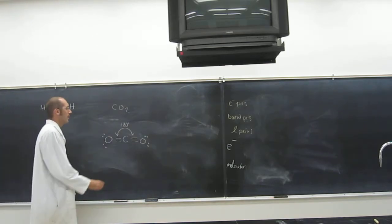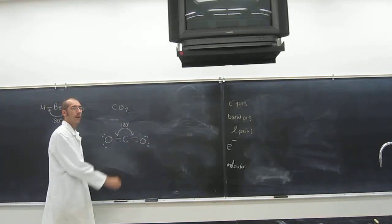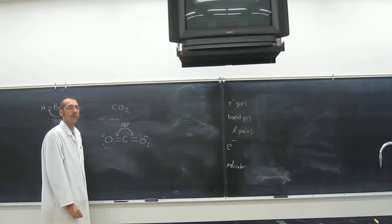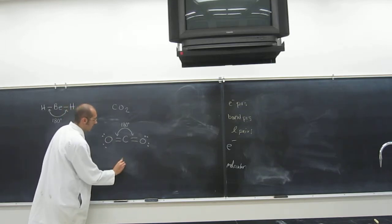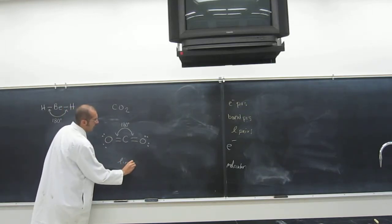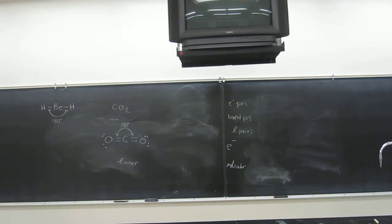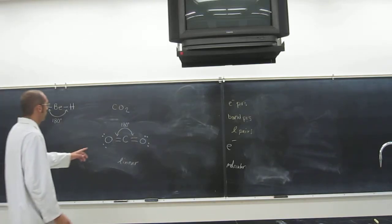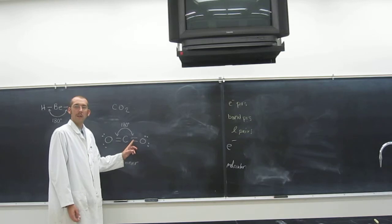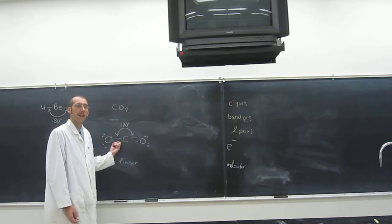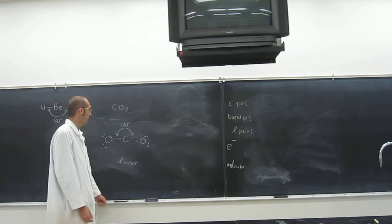So what is the molecular geometry around that carbon? Linear. What about the electron pair geometry? How are the electrons arranged around that carbon? Linear. They're the same, right? Those are the bonds.